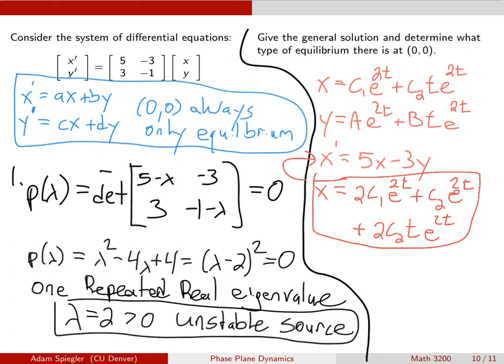You take your suggested solution for x, you plug that in to the equation for x. You take the suggested solution for y, you plug it in for y, and then you group all of your terms together.